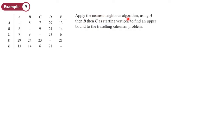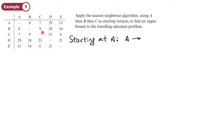Example nine: apply the nearest neighbor algorithm using A, then B, then C as starting vertices to find an upper bound to the Travelling Salesman Problem. Let's do our working starting at A. The way I'll do the working is going to be very similar to Prim's algorithm. The only difference is I only look at one column — that is the vertex I'm currently at. I'm not going to cross out row A because I'm going to need this to get back to where I start. I look at column A and the lowest weight is 7, which is C. So I go from A to C.